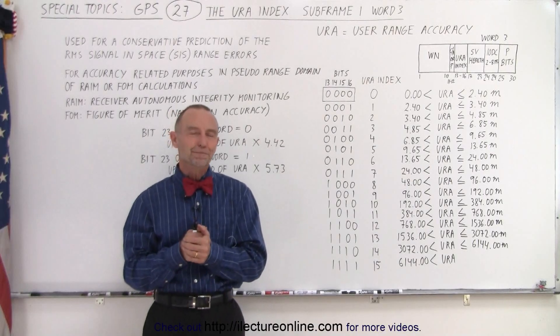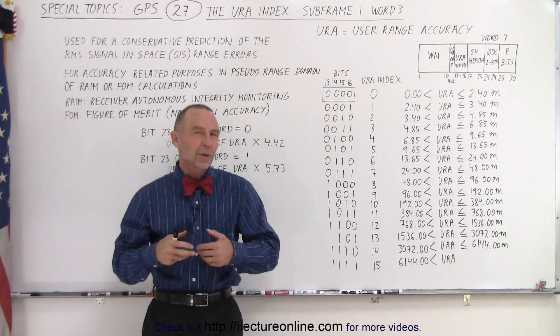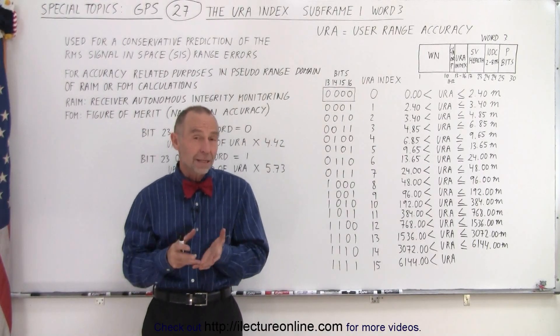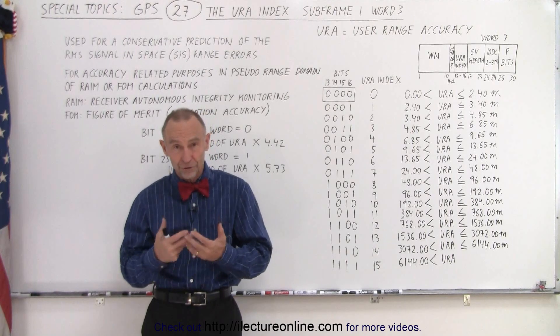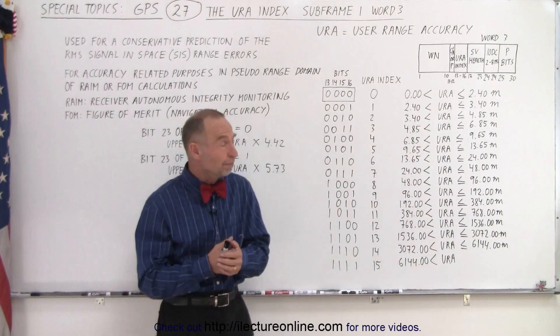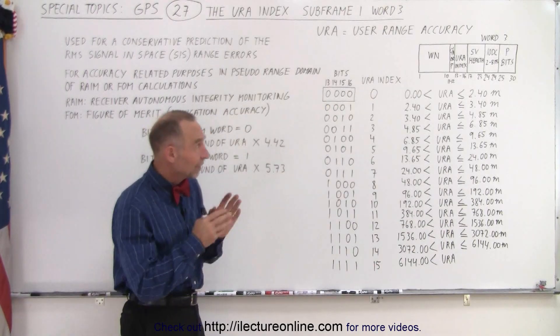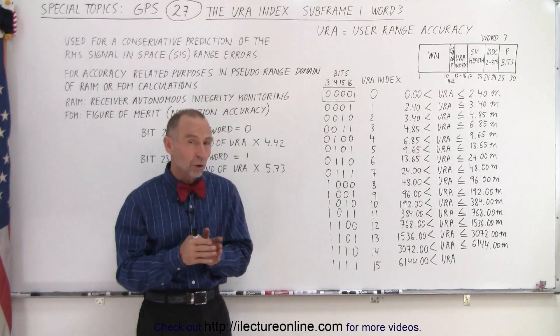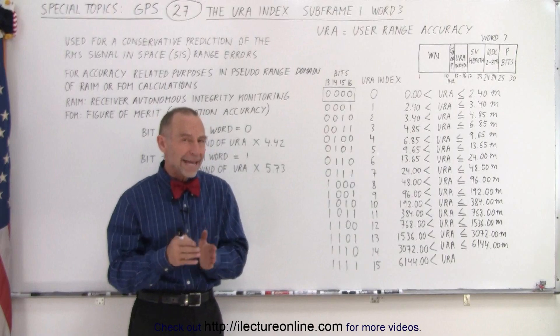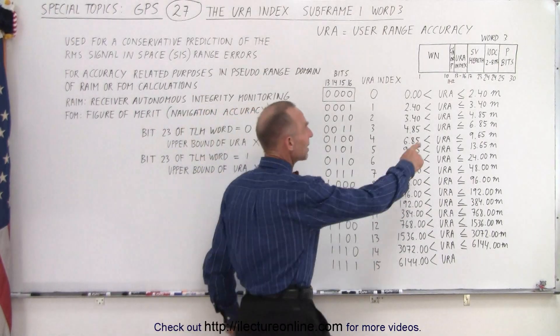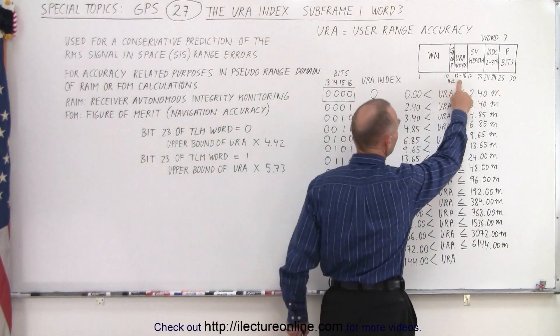Welcome to Electronline. Continuing looking at WR3 of the first frame, frame 1, we look at the next four bits called the URA index, and they're located right here in WR3.